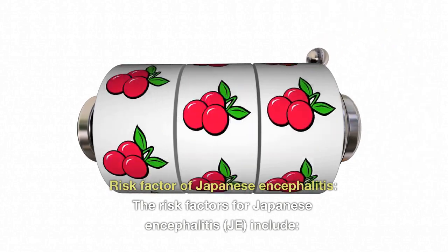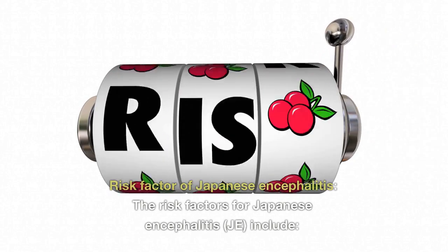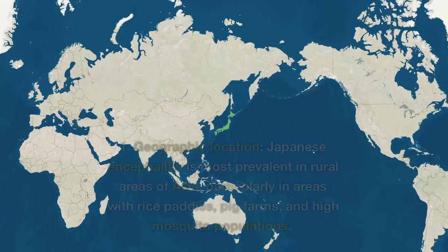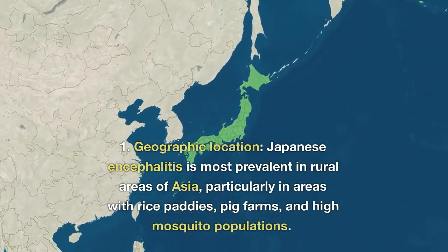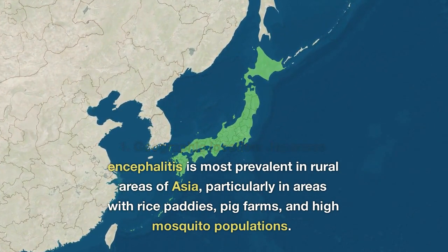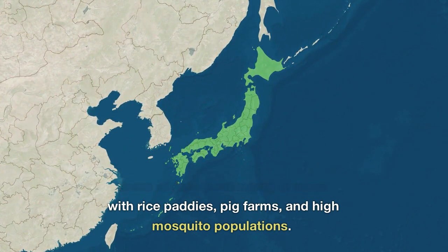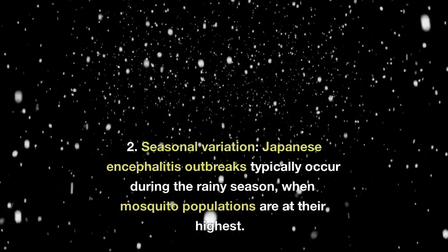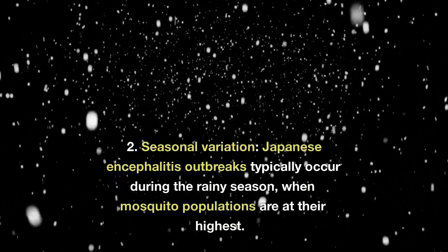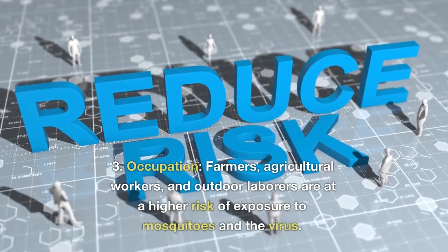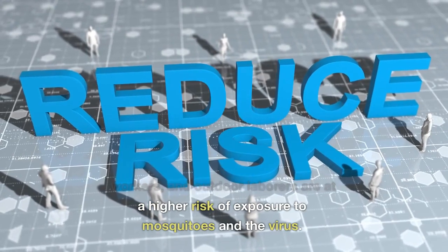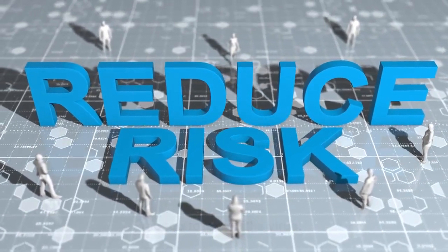Risk factors for Japanese encephalitis include: Geographic location — Japanese encephalitis is most prevalent in rural areas of Asia, particularly in areas with rice paddies, pig farms, and high mosquito populations. Seasonal variation — outbreaks typically occur during the rainy season, when mosquito populations are at their highest. Occupation — farmers, agricultural workers, and outdoor laborers are at a higher risk of exposure to mosquitoes and the virus.